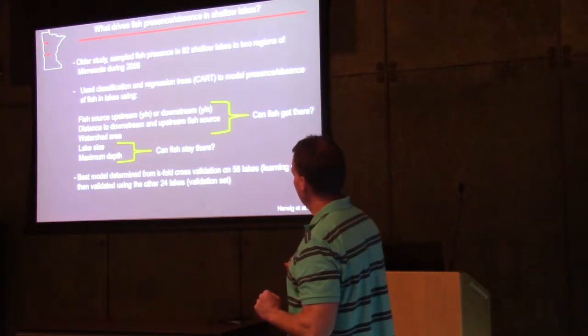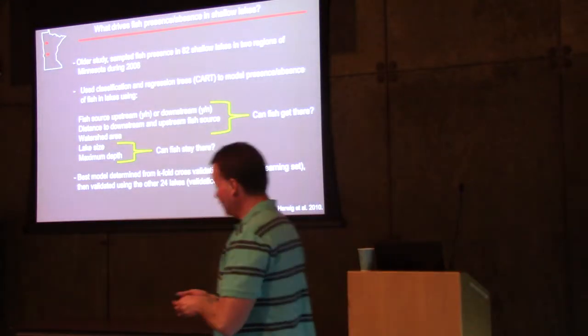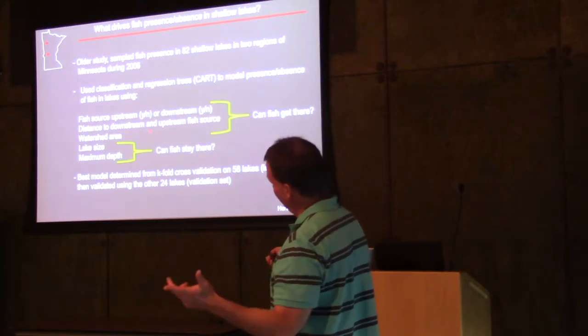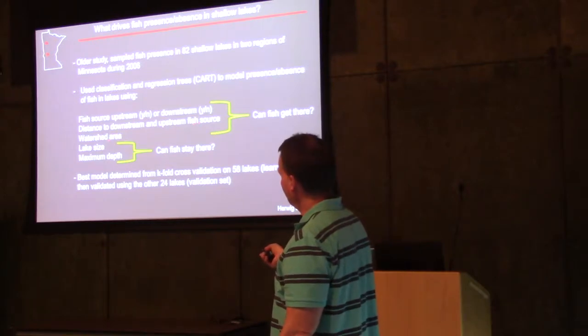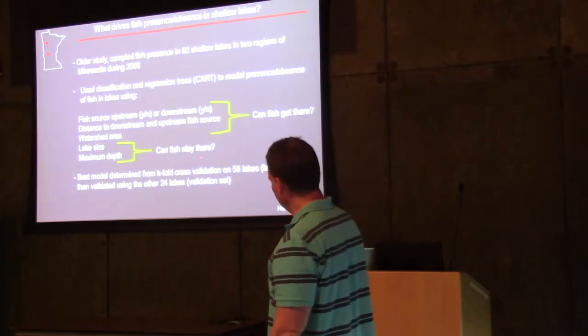Variables we used: is there an upstream source? Is there a downstream source? You might think that an upstream source is more important because they can move with the flowing water. This might be a little harder because they've got to swim against the current. Distance, how far you've got to swim as the fish swims, as we say, downstream versus upstream. Watershed area again, and then lake size and maximum depth. Can the fish get there, and can the fish stay there?